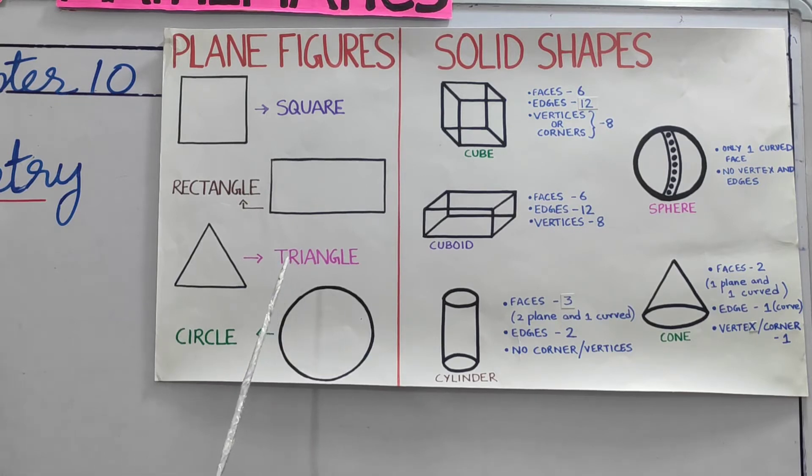Next one, a triangle. It has three sides and three corners or vertices. It is a circle. It has one curved surface or face.